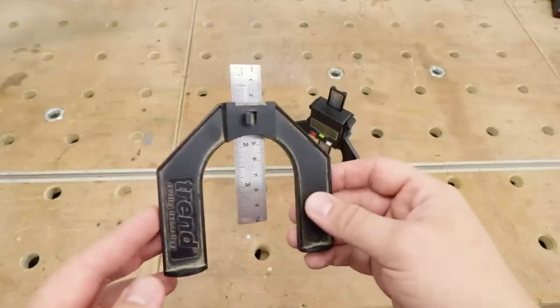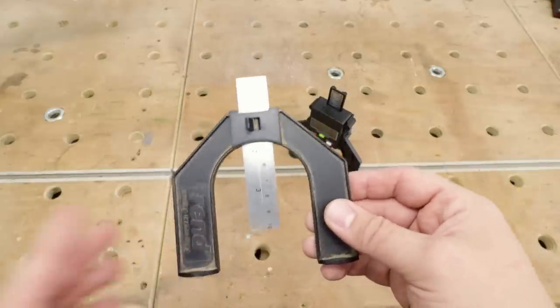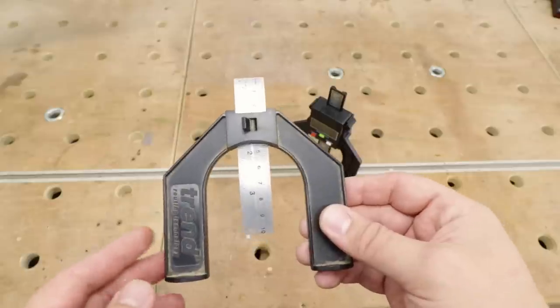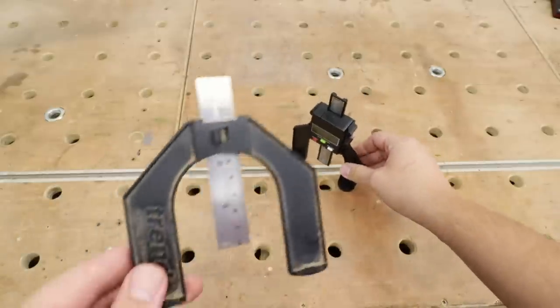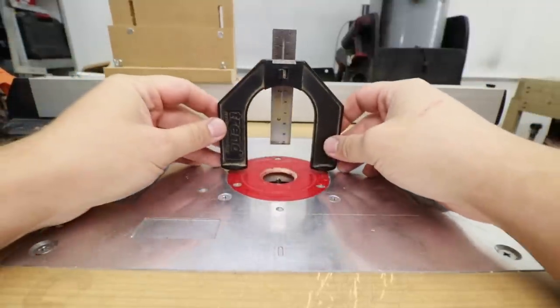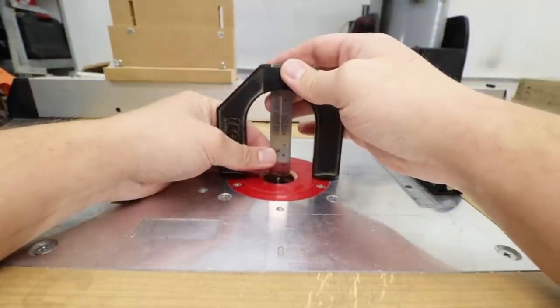The next non-essential tool on my list is a depth gauge. This one's from Trend, I bought it years ago, probably about four or five years ago. Recently I got this digital version of it as well.